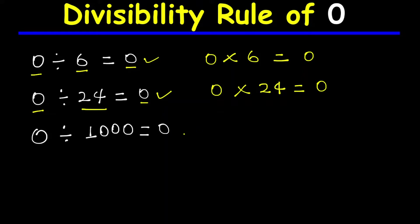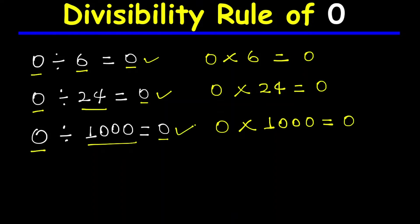Zero divided by any non-zero number is always zero and has no remainder. Therefore, we say zero is divisible by any non-zero number.